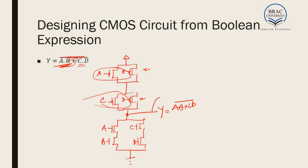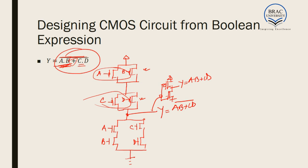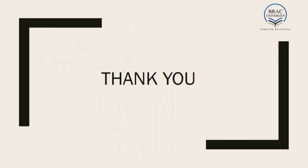If we wanted AB plus CD without the inversion, we would connect an inverter to the output and obtain AB plus CD. So it is to be noted that in CMOS design, originally we get inverted output, and by connecting that to an inverter, we get the non-inverted or complemented output. That is all for now. Thank you so much.